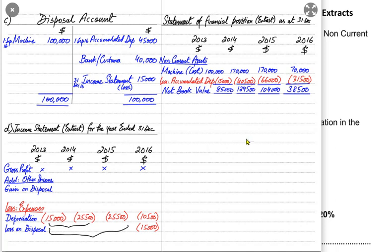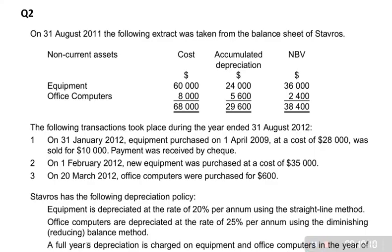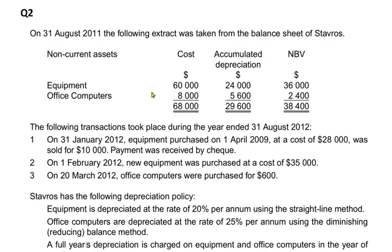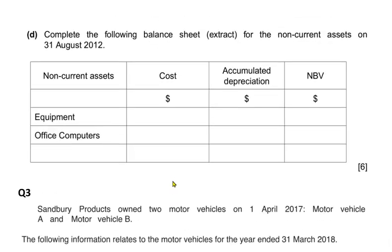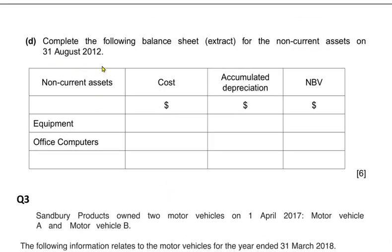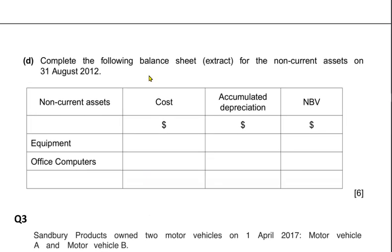That is how to make an income statement extract and an SOFP extract. In question two — Stave Ross — there is a balance sheet extract already given for 2011, and we need to make an extract for the next year, 2012. We will use the 2011 figures as the opening balances to build the 2012 extract.